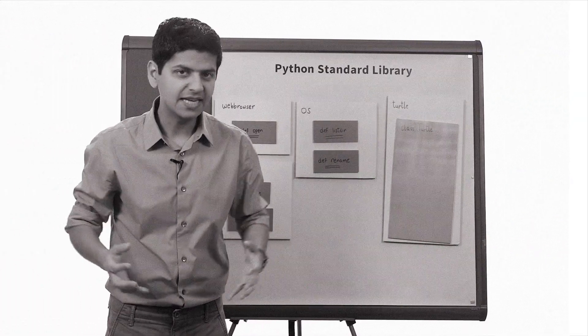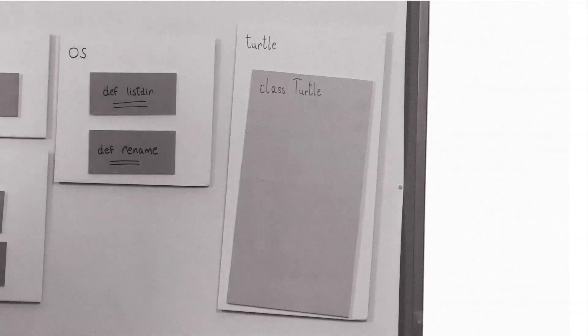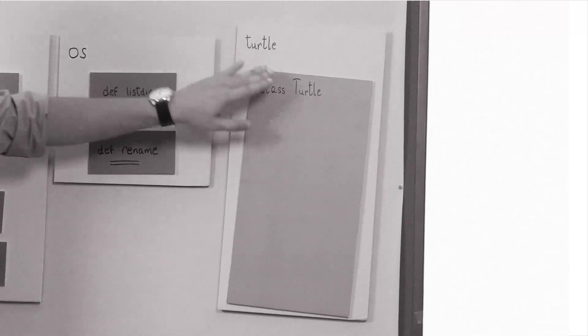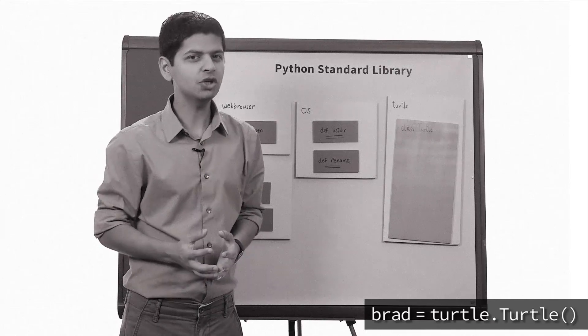For now, you can think of a class as a neatly packaged box that puts things together really well. And it allows us to write code like turtle.turtle with these strange looking brackets, as if we were calling a function.